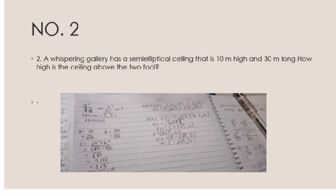Simplifying further, we get 4 square root of 10 equals 2 square root of 15. Next, we need to find the vertices: the first vertex is at (0, square root of 10) and the second is at (0, negative square root of 10). The foci are at (0 plus 2 square root of 5, 0) and (0 minus 2 square root of 5, 0), giving us (2 square root of 5, 0) and (negative 2 square root of 5, 0).